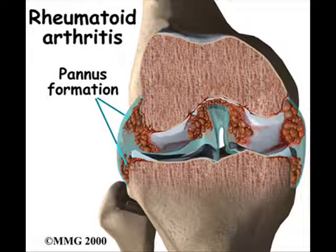Rheumatoid arthritis usually affects both temporomandibular joints about equally, which is rarely the case in other types of temporomandibular joint disorders. Arthritis in a temporomandibular joint may also result from injury, particularly injury that causes bleeding into the joint. Such injuries are fairly common in children who are struck on the side of the chin.